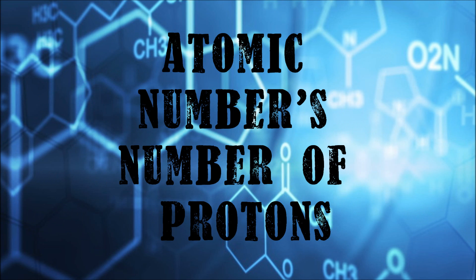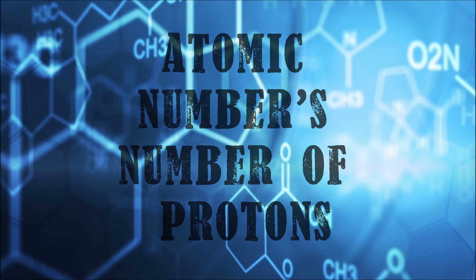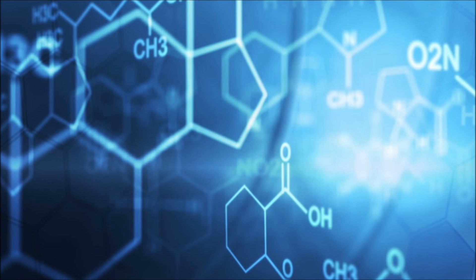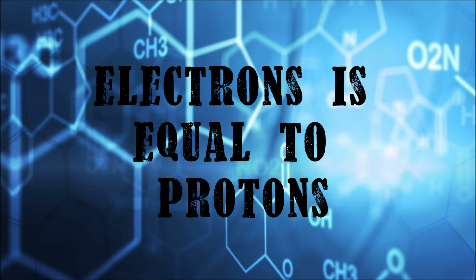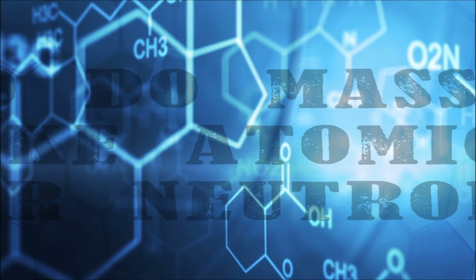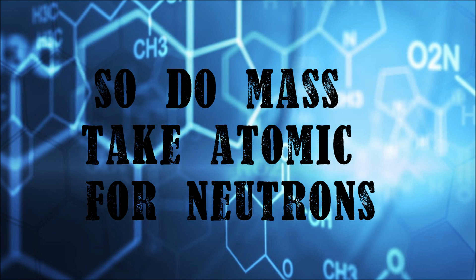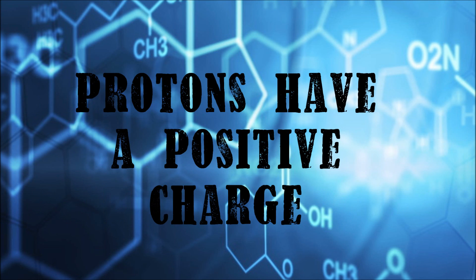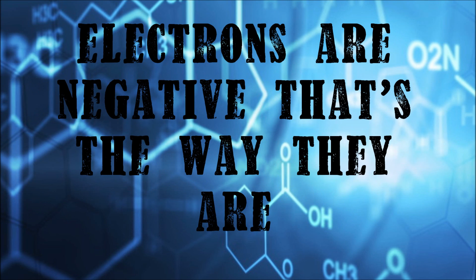Atomic numbers: number of protons. Mass number is protons and neutrons. Electrons are equal to protons, so two mass take atomic for neutrons. Protons have a positive charge, electrons are negative.